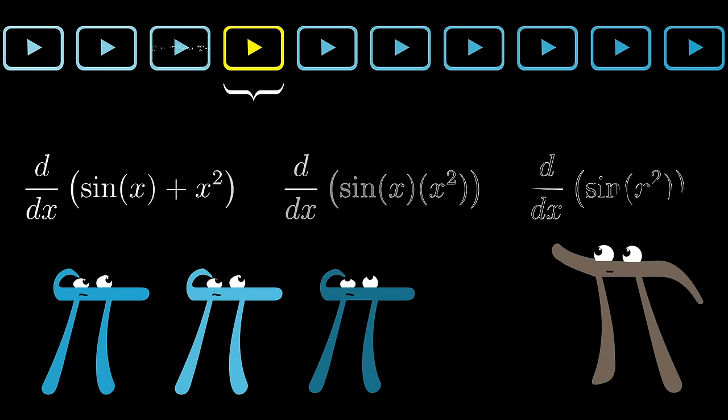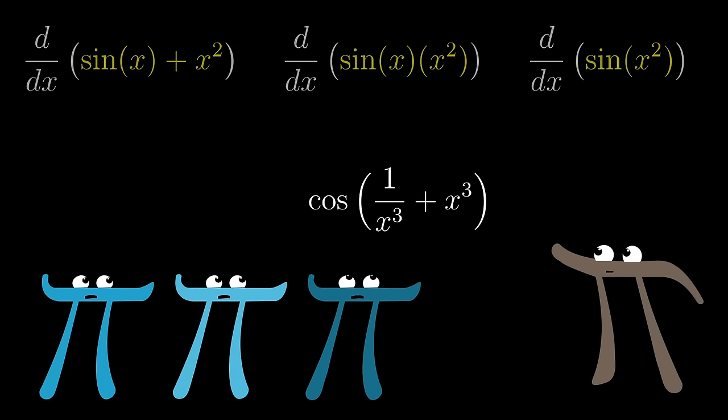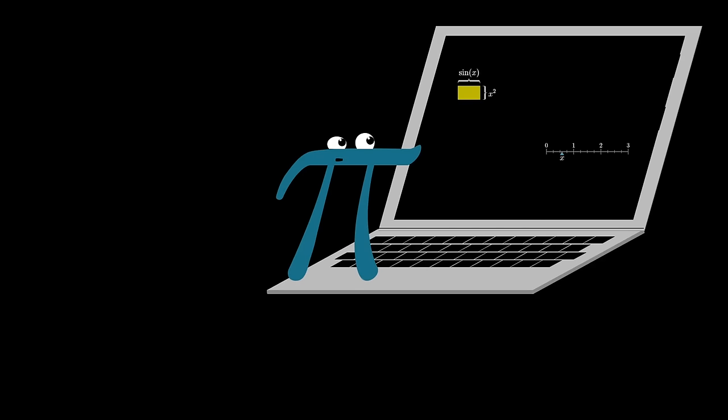So those are the three basic tools to have in your belt to handle derivatives of functions that combine a lot of smaller things. You've got the sum rule, the product rule, and the chain rule. And I'll be honest with you, there is a big difference between knowing what the chain rule is and what the product rule is, and actually being fluent with applying them in even the most hairy of situations.